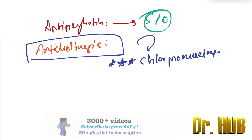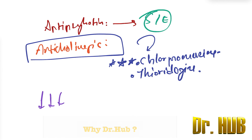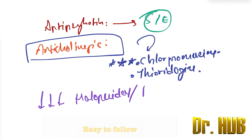After chlorpromazine, the next highest anti-cholinergic potential is thioridazine. The least potential for anti-cholinergic side effects is seen with haloperidol as well as risperidone.